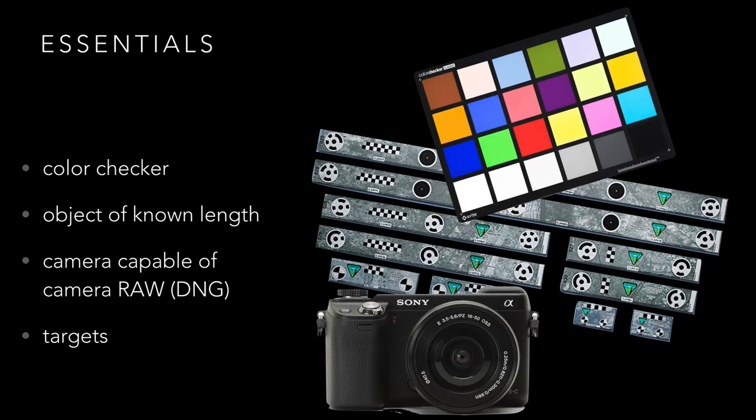Congratulations — these are the basics. To really do this right, you're going to need some modest gear: a color checker, small versions of which cost about $10 on Amazon; an object of known length, something that you can use to scale the model — such as the very cool color bars produced by Cultural Heritage Imaging, which include special targets that the software can read. You can create your own, or use other types of scale bars or any object that's easy to see in the photos and that you can measure. Make sure that you shoot in camera raw whenever possible.